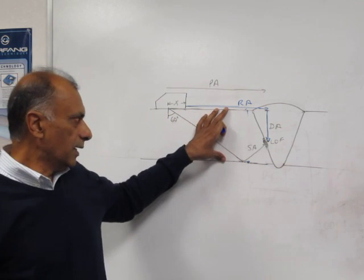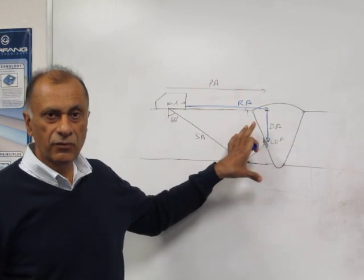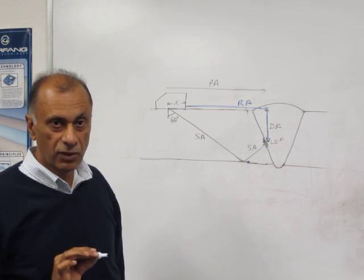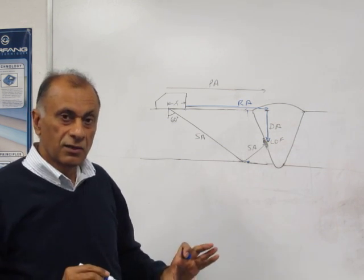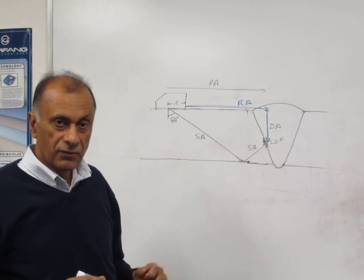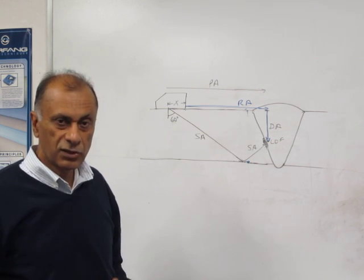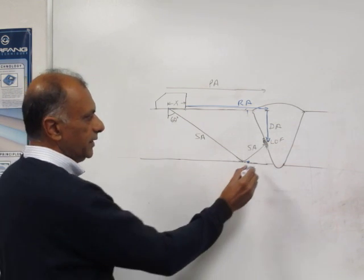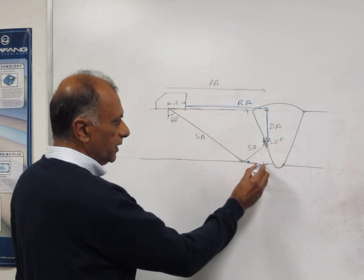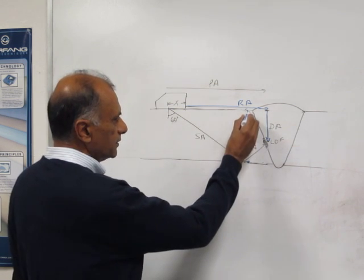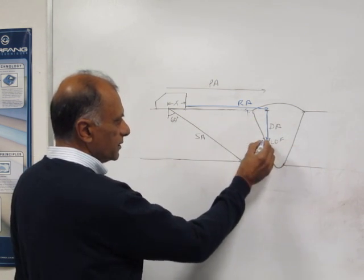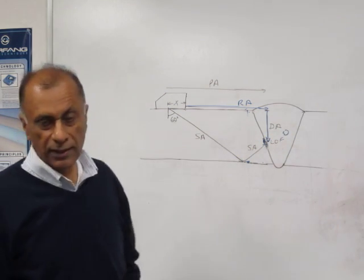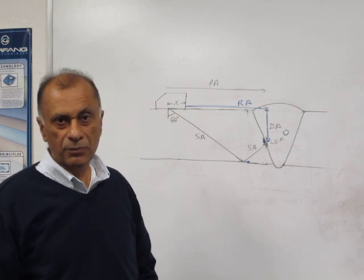Knowing the RA and DA, we can pinpoint the location of the flaw. Depending on the flaw location in the weld, we can determine whether it's lack of fusion, crack, or slag. If the indication is here, it's a crack. If it's here, it's a toe crack. If it's here, it would be lack of fusion. If it's somewhere inside the weld, it would most likely be slag or porosity.